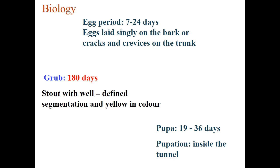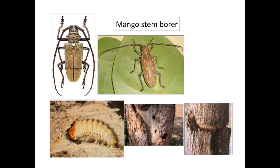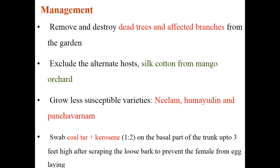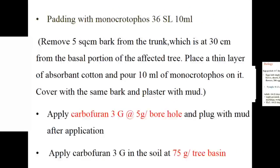Biology: egg period is 7–24 days; eggs are laid singly on bark cracks on the trunk. Grub period is 180 days — well-defined segmentation, yellow in color. Pupal period is 19–36 days inside the tunnel. Grubs bore into the sapwood making irregular tunnels, feeding on vascular tissues, interrupting nutrition and water transport, causing drying of terminal shoots. Frass comes out from several points; sometimes sap oozes out. Wilting of branches occurs. Tolerant varieties like Neelam and Himayat are recommended; remove and destroy dead and affected branches.